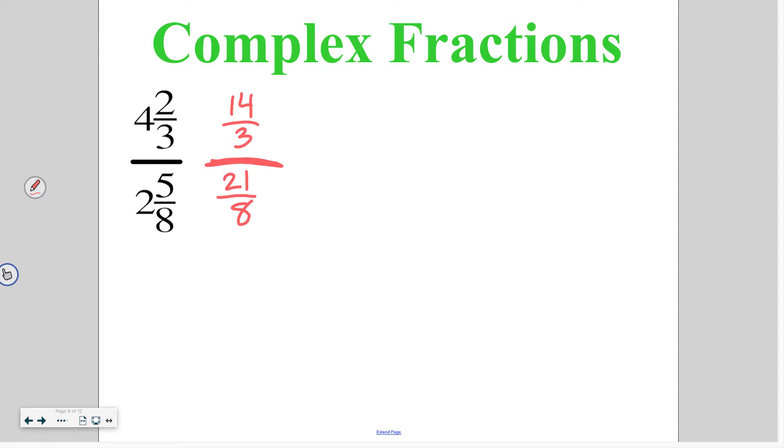While this might look complex, what this really means is you are doing 14 thirds divided by 21 eighths. So if I wrote that out more like you are used to seeing it would say 14 thirds divided by 21 eighths. If you remember from before, in order to divide fractions you need to keep, change, and then flip.